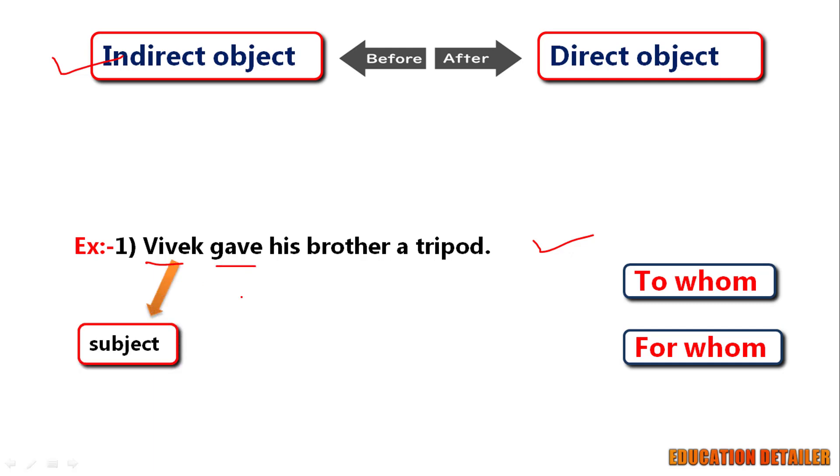Give is a verb and when you ask a question, Vivek gave what? A tripod. It is the direct object, you know that.